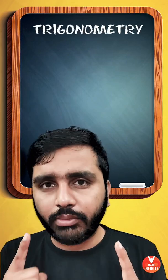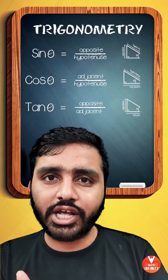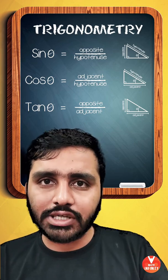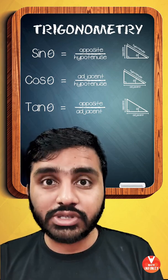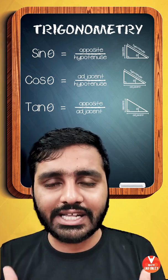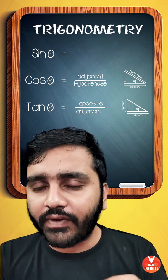Let's revise trigonometry in just one minute. SOHCAHTOA means sin θ equals opposite upon hypotenuse, cos θ equals adjacent upon hypotenuse, tan θ equals opposite upon adjacent.